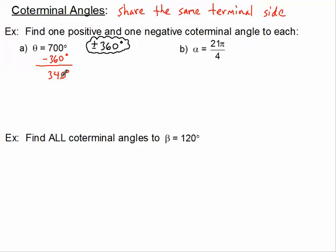Okay, so that's another angle that's coterminal to 700 degrees. Obviously we're not to negative land yet, so let's subtract again another 360 degrees, and this time we're going to get to negative 20 degrees. Aha, we do have now a negative angle.